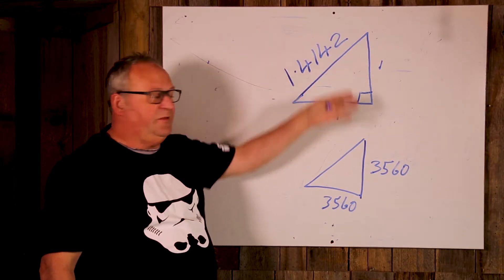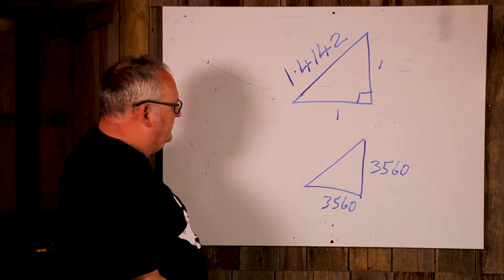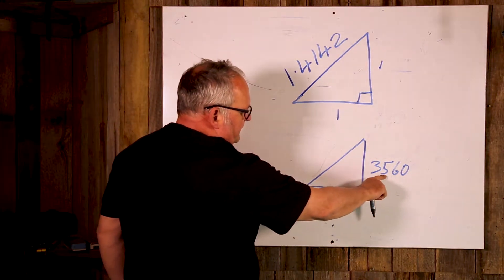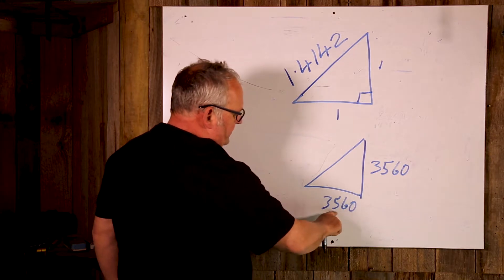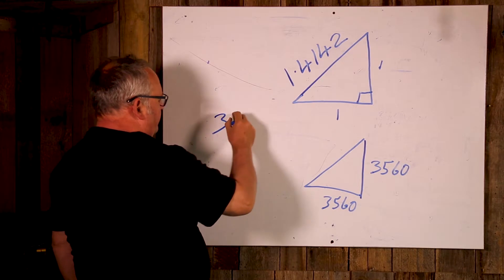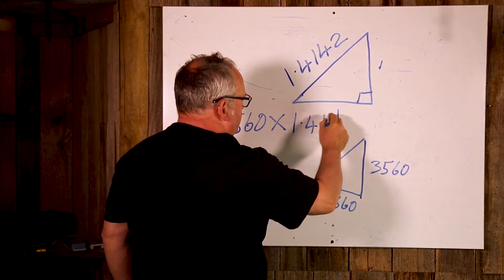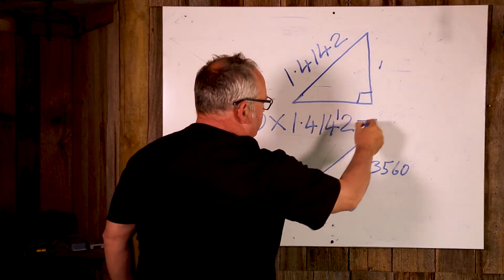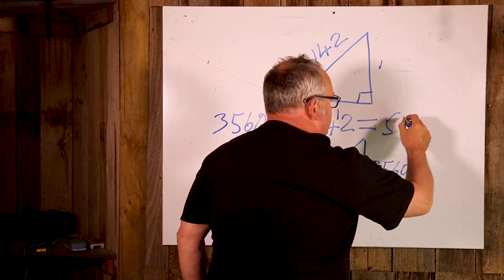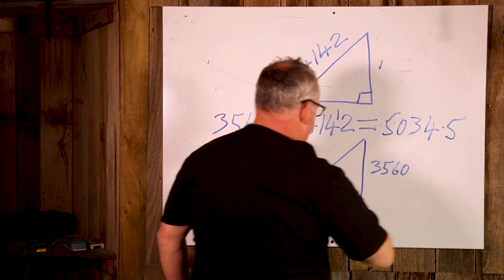If I use that number and I've got a right angle triangle and I've got 3560, I go 3560 times 1.4142, it equals 5034.5 millimeters. And that is the hypotenuse, 5034.5. How easy is that?